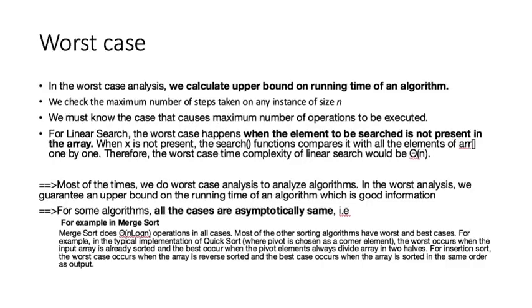Finally, we have the worst case. In worst case analysis, we calculate the upper bound on running time for an algorithm. This is the opposite of the best case, but it's actually the most useful. We check the maximum number of steps taken on any instance of size n. We must know the case that causes the maximum number of operations to be executed.